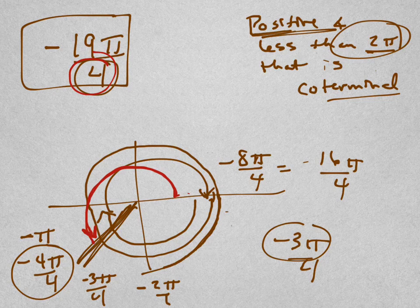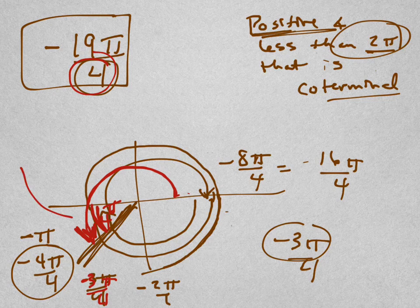So this direction is how much? If this is negative 3π over 4 right here, this angle right here is positive π over 4. Sorry, you can't see that very good. That angle is π over 4 right here, so what's this total angle?